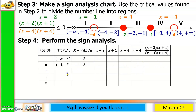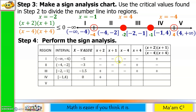Region 3, interval negative 2 to negative 1: assign x equals negative 1.5. Negative 1.5 plus 2 is positive; negative 1.5 plus 1 is negative; negative 1.5 minus 4 is negative; negative 1.5 plus 4 is positive. Count: 1, 2 — two is even, therefore the sign is positive. Region 4, interval negative 1 to positive 4: assign x equals 0. 0 plus 2 is positive; 0 plus 1 is positive; 0 minus 4 is negative; 0 plus 4 is positive. Only 1 negative, and 1 is odd, therefore the sign is negative.